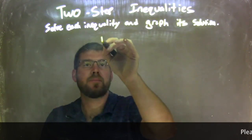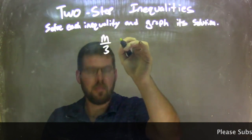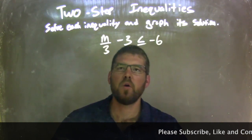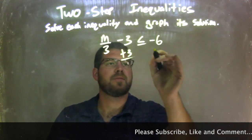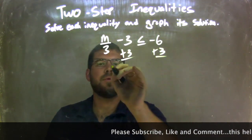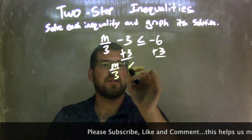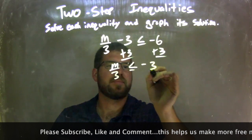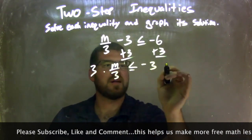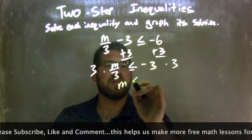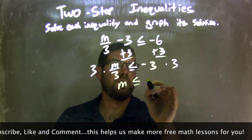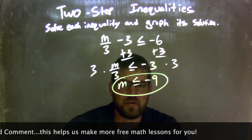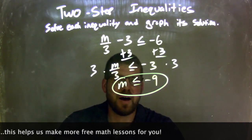M over 3 minus 3 is less than or equal to negative 6. First step: add 3 to both sides. That leaves me with M over 3 is less than or equal to negative 6 plus 3, which is negative 3. Then I need to multiply both sides by 3, giving me M is less than or equal to negative 3 times 3, which is negative 9. M is isolated now, so our final answer is M is less than or equal to negative 9.